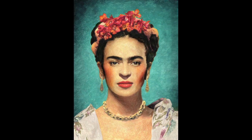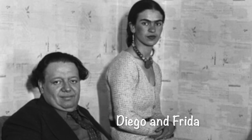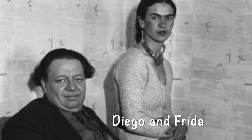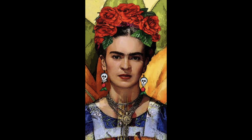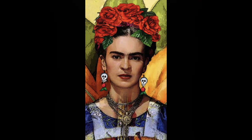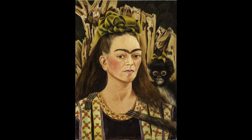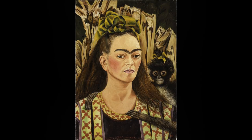Frida Kahlo was a very famous Mexican painter who was known for some very unusual but very personal works. She was also married to another very famous artist called Diego Rivera. She was born in Mexico in 1907, and when she was six years old she got a disease called polio that left her disabled. Later she decided she was going to become a doctor, but when she was 18 she had a very bad traffic accident which badly injured her and she was in a lot of pain for the rest of her life.